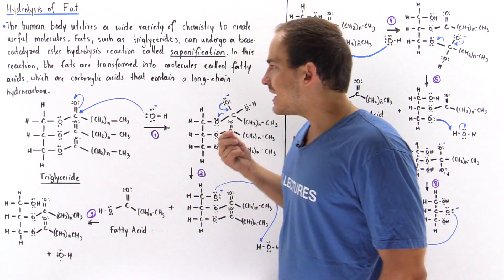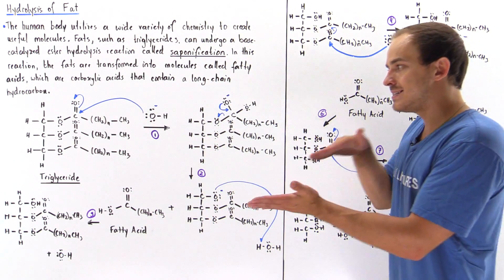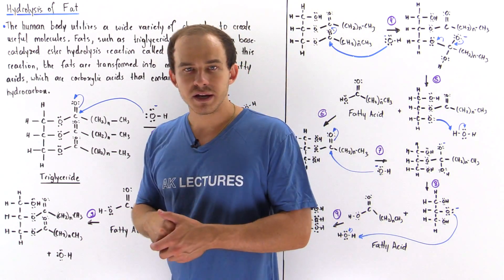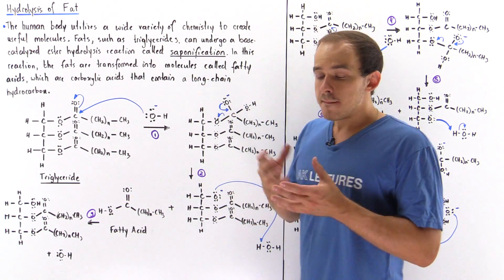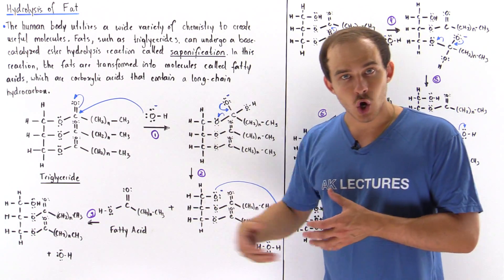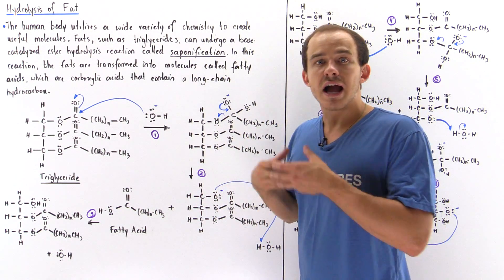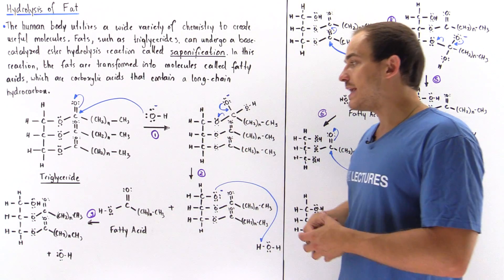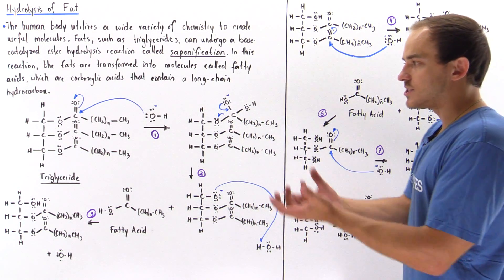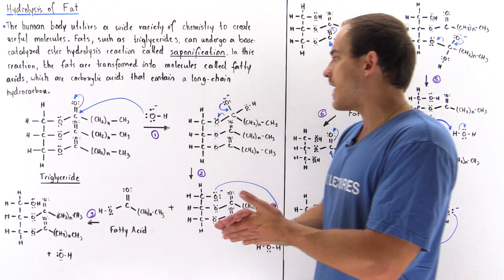A fatty acid is essentially a carboxylic acid containing a long-chain hydrocarbon. These fatty acids are then transformed into acetyl coenzyme A, which then goes into the Krebs cycle and is transformed into carbon dioxide and water, with a certain amount of energy obtained as a result of that process.